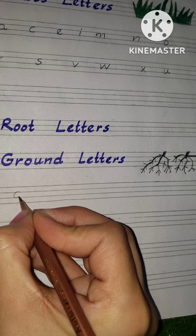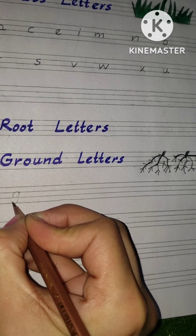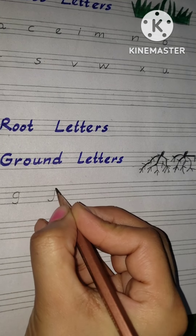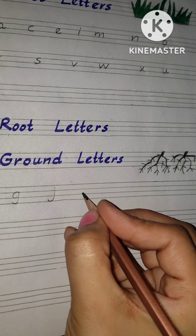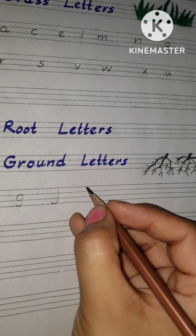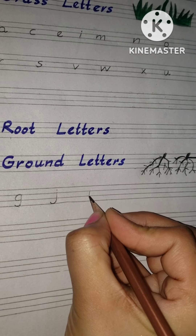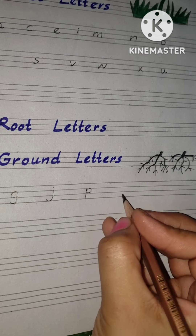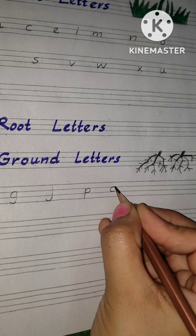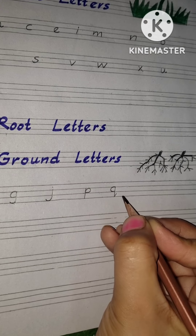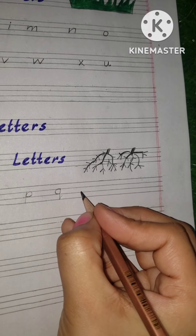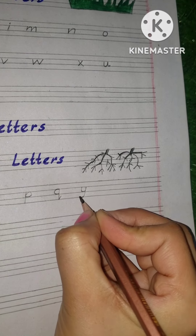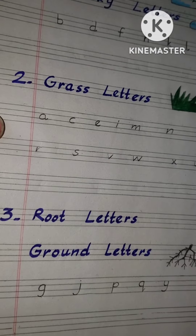Let's start the root letters. The first letter is G, then J, next letter is P, next is Q, and Y. So these are the root letters.